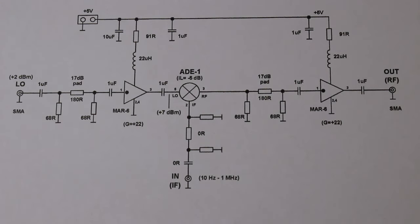Here is the local oscillator input. In my case it is plus 2 dBm. And I have here a 17 dBm pad and an amplifier, the Mar 6, to adapt this level to the local oscillator level. Here is the level of the ADE1, which is plus 7 dBm. The ADE1 is a level 7 mixer.